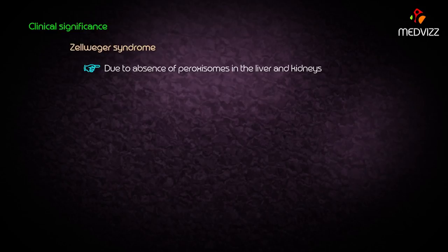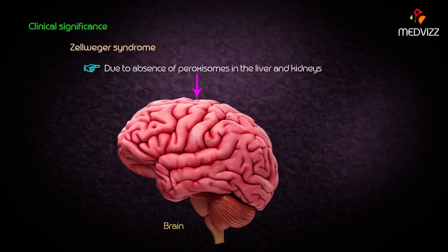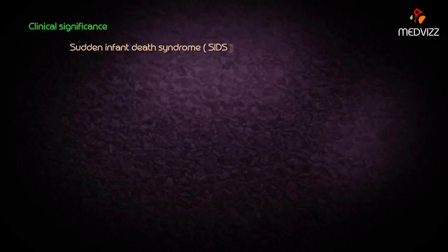Zellweger syndrome results from the absence of peroxisomes in the liver as well as the kidneys, resulting in accumulation of very long chain fatty acids, especially in the brain.